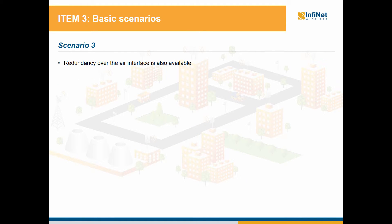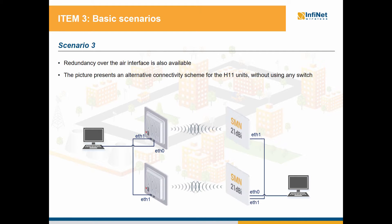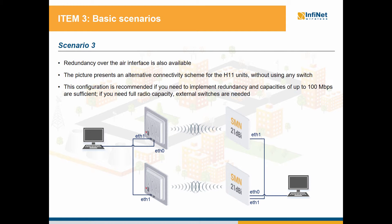We have been talking so far about redundancy through the wired Ethernet interfaces, but we can have redundancy over the radio interface as well. Let's begin with a simple example that has the purpose to show an alternative connectivity scheme for hardware 11 units without using any switch. You can set up two parallel links by connecting the local units through the Ethernet interfaces. You can configure link aggregation between the RF interface and the Ethernet interface if you wish, because our units do not limit load balancing for the Ethernet interfaces. This configuration is recommended if you need to implement redundancy and capacities of up to 100 Mbps are sufficient.